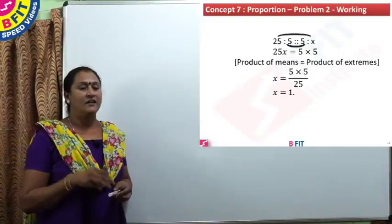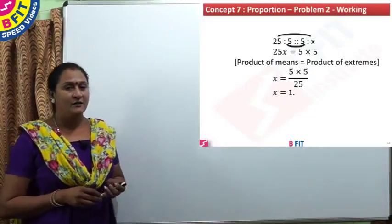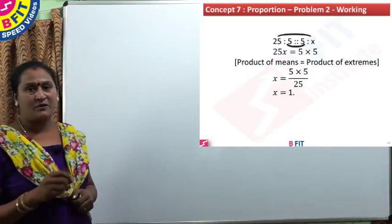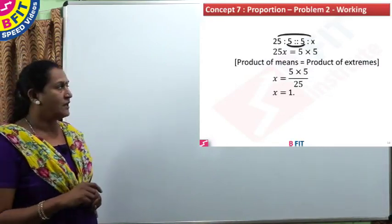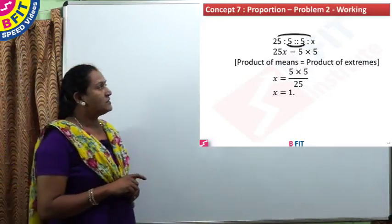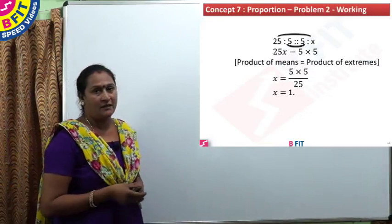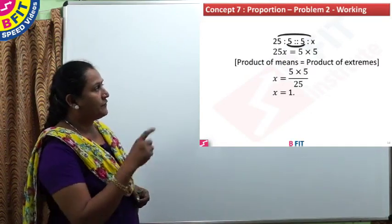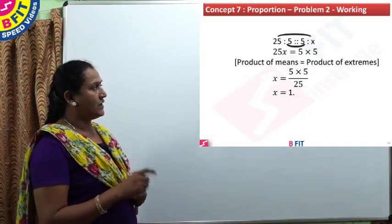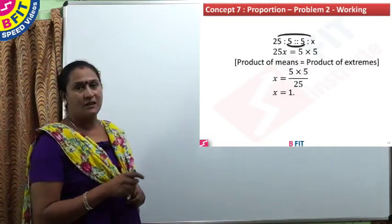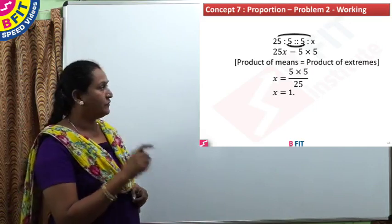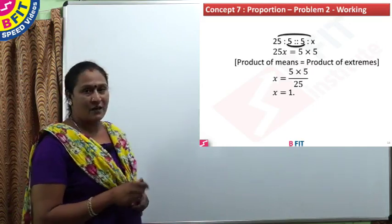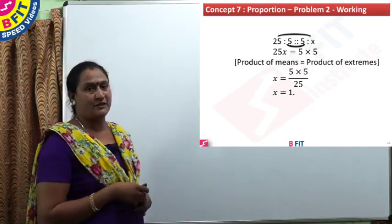Working: 25 is to 5 as 5 is to x — the second number is repeated, and x is taken in the fourth place. Product of extremes: 25x = 5×5, so x = 1, which is the third proportion.